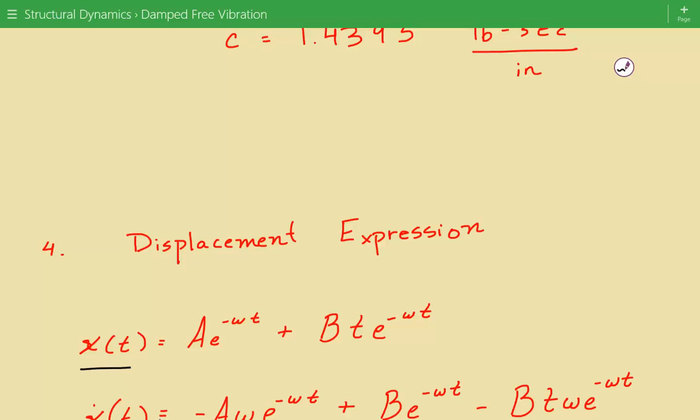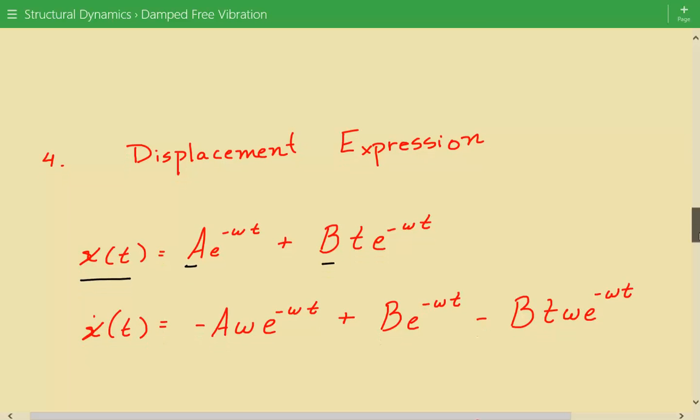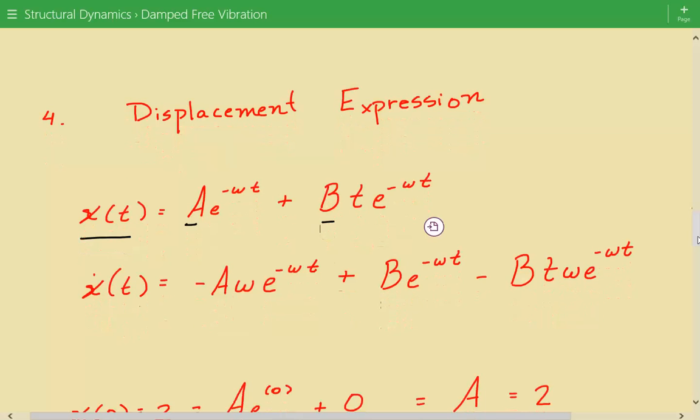So we have to solve for A and B using the initial conditions that we have. And I also wrote down the derivative of this expression because that's going to give us the velocity. So here's the derivative. The velocity is given by this expression. So we need to solve for A and B.